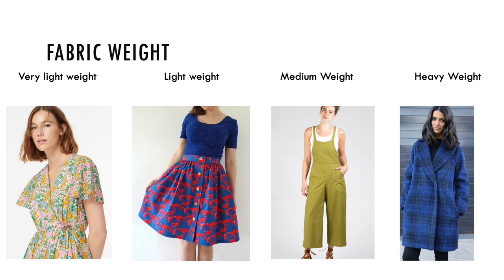Next we have lightweight fabrics, which are around four to six ounces per yard. These tend to make great blouses, shirts, skirts, dresses, and craft projects. Some examples include quilting cotton, muslin, rayon challis, crepe, chambray, and jersey knit. This woman is wearing a skirt made from a quilting cotton and a top made from a jersey knit.